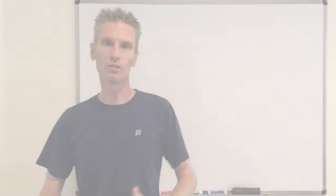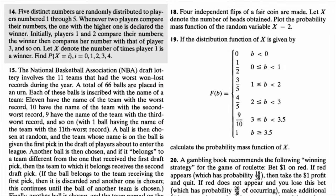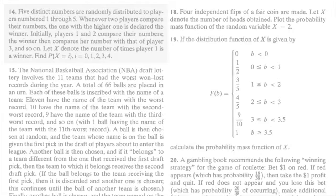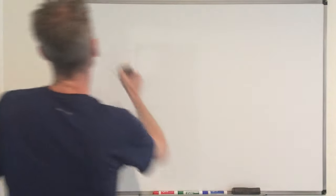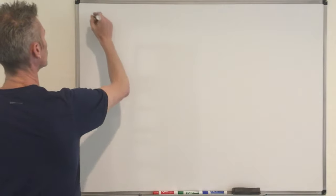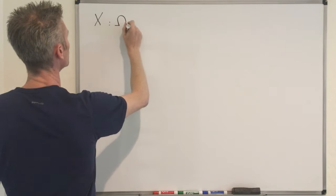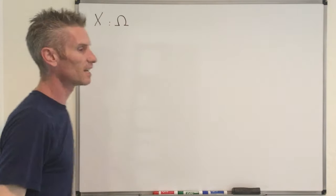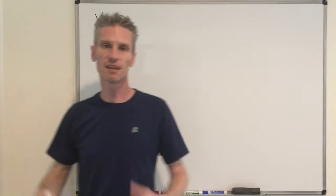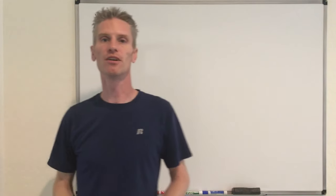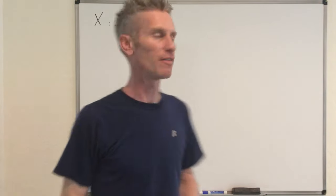But instead of looking at all the possible outcomes, we want to look at a specific aspect of the experiment and look at the number of times player one is going to win. So we have a random variable X defined on some sample space Omega. Omega is all the possible rankings of the five numbers — that's five factorial.